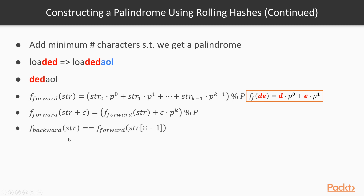We need another rolling hash function — we will call it f_backward — that computes the hash of the reverse string. So f_backward of a string should be equal to f_forward of that string reversed. And if these two are equal, then we likely have a palindromic prefix. Why do I say 'likely' and not 'definitely'? Because our hash functions are computed modulo capital P, this will lead to some information loss and so-called collisions or false positives — the two hashes might be equal but the strings might actually be different. If we pick lowercase p and capital P well enough, this is very unlikely to happen, but it's something you should keep in mind.